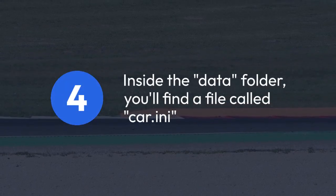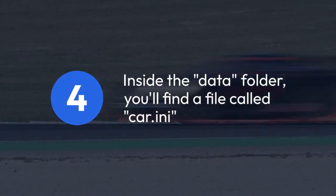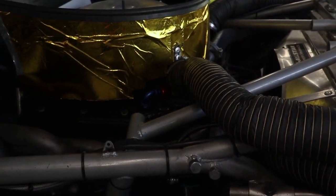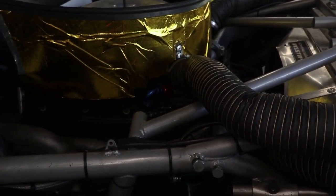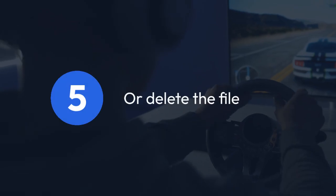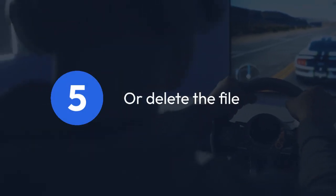Inside the Data folder, you'll find a file called car.ini. This is the CSP configuration file for that particular car. To reset the CSP settings to default, you can either rename this file by adding 'old' at the end — for example, car.ini.old — or you can just delete this file.